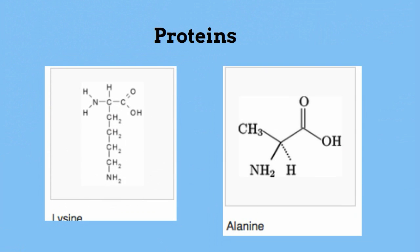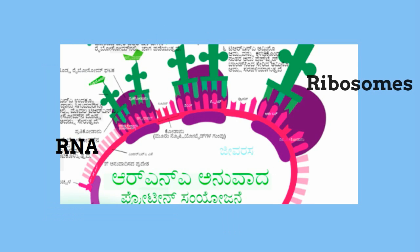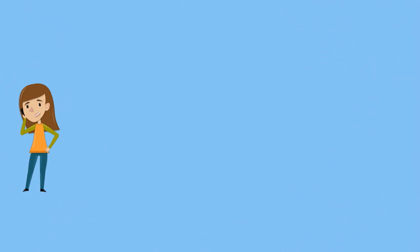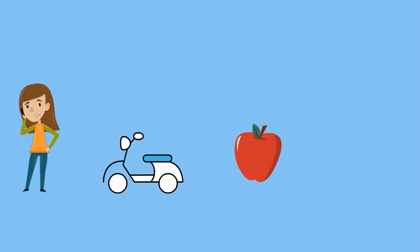Proteins are large chains of amino acids. There are 20 amino acids used by your body. Your RNA carries instructions to the ribosomes for the order of the amino acids for each protein it makes. Proteins carry out many jobs in the cell. Your body has hundreds of proteins. Some help with communication, others help with transportation. Protein amylase helps break down food. Collagen is a protein that helps bind skin together.